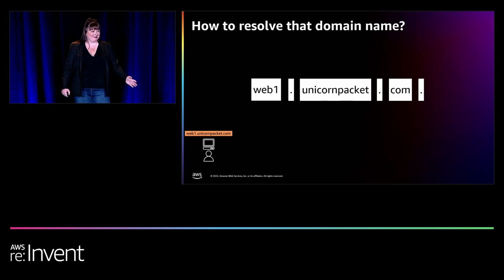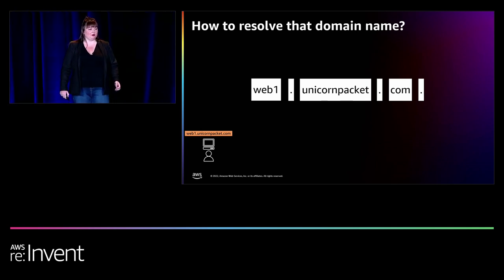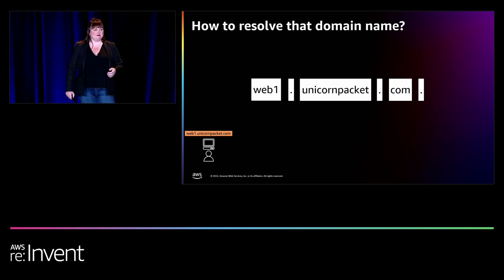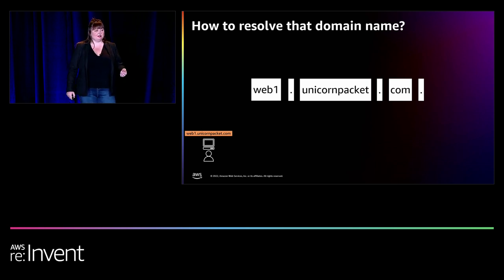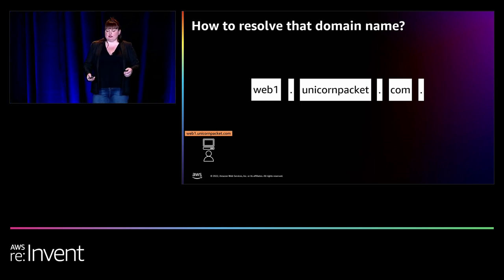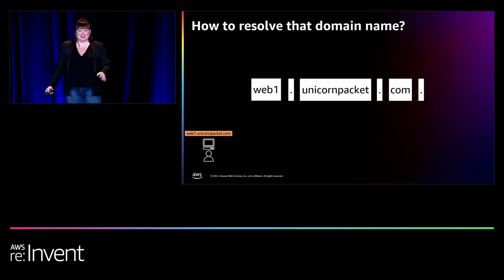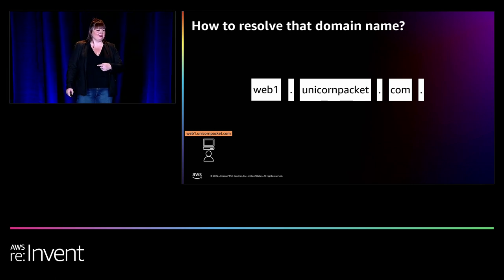Now I said we'd talk about how we got there in a web browser. So we're going to go through how we resolve web1.unicornpacket.com from the client. Before I get into that, I'll mention nameservers a couple of times. Nameservers can be authoritative or non-authoritative. Authoritative nameservers contain information about the domain name they serve and will provide the answer to queries known about in their zone files.